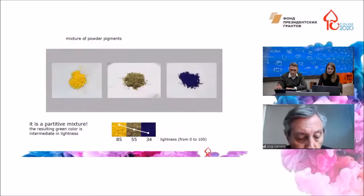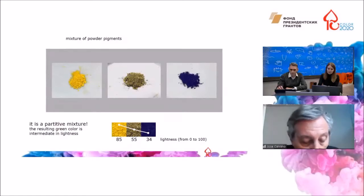This is more evident when we mix the same pigments in powder form, not using water at all. Here, it is clear that the green color is the result of a partitive mixture, where the blue and yellow small particles do not mix intimately but remain separate, adjacent to each other.